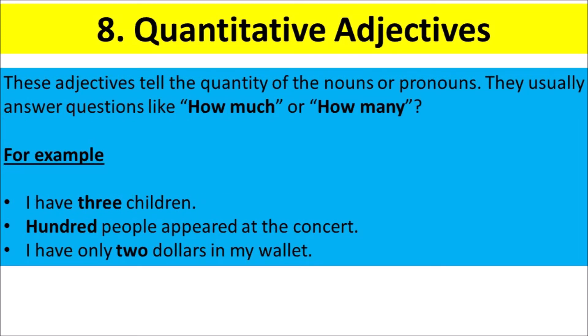Quantitative Adjectives. These adjectives tell the quantity of the nouns or pronouns. They usually answer questions like: How much? Or, How many? For example, I have three children. Hundred people appeared at the concert. I have only two dollars in my wallet.